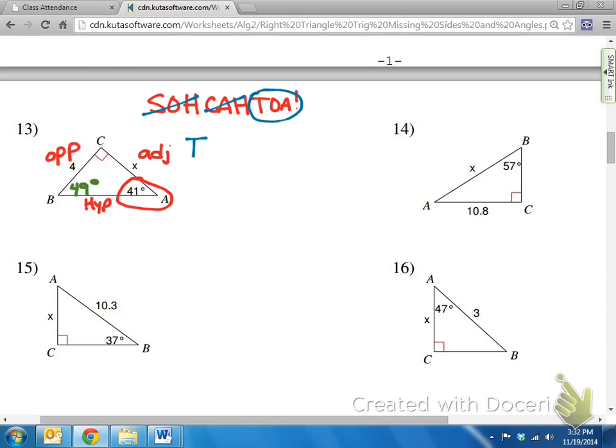So that means tangent of 41 degrees equals opposite, which is 4, over X, which is what we're trying to find.